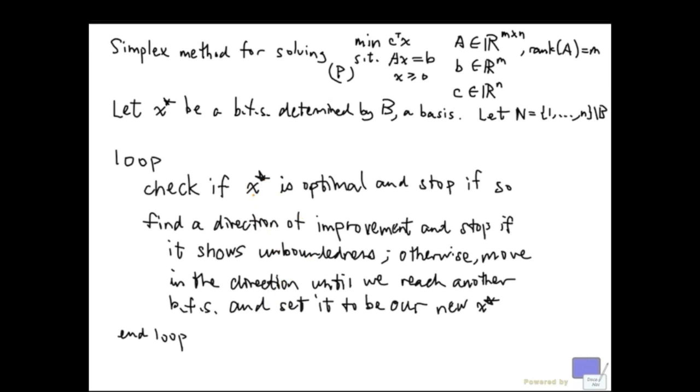This scheme works as long as in every iteration all the basic variables in the basic feasible solution are non-zero. So complication arises when some basic variable in our basic feasible solution is zero. So it could happen right at the beginning, the basic feasible solution at the beginning doesn't have all basic variables non-zero, or when we move to a new basic feasible solution, we have some basic variables that are zero.